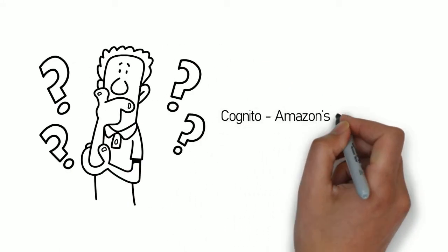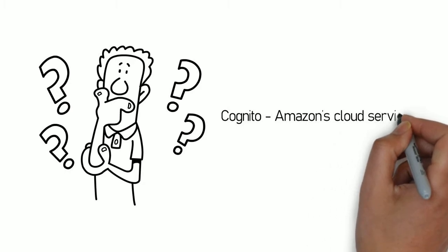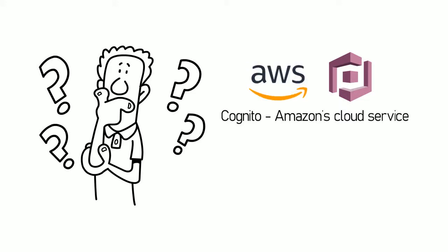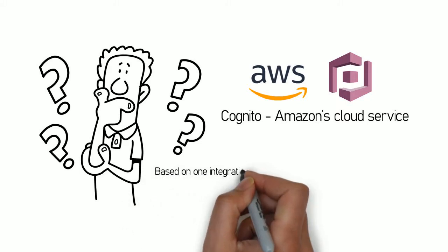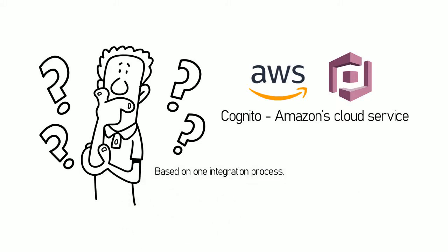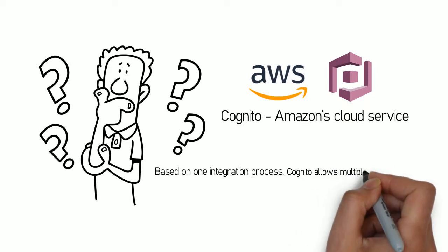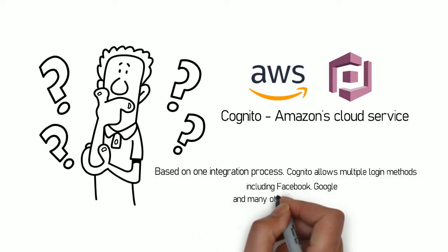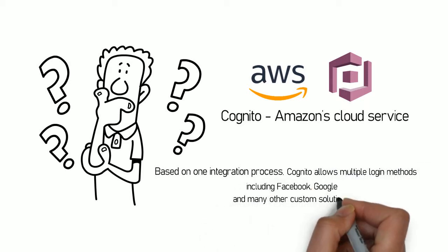Cognito, Amazon's cloud service for authentication, might be the answer. Thanks to this solution, you do not have to deal with high-risk security issues like strong login credentials, because everything is handled by AWS. Based on one integration process, Cognito allows multiple login methods including Facebook, Google, and many other custom solutions.